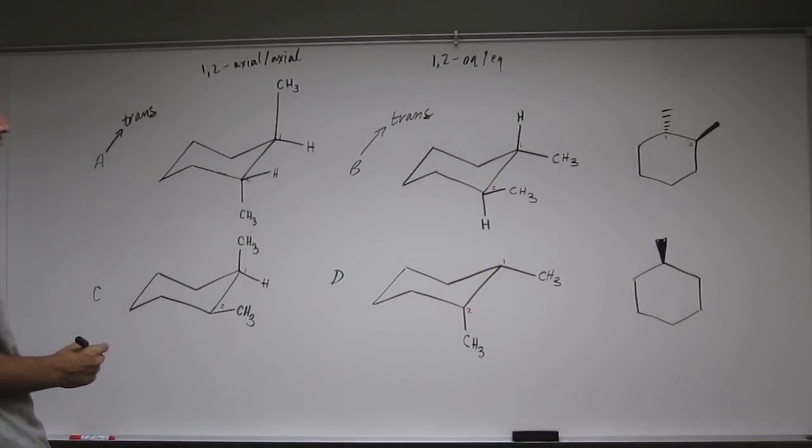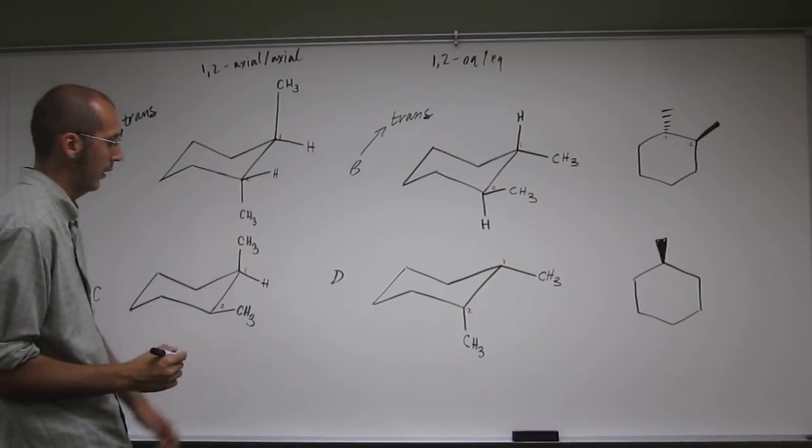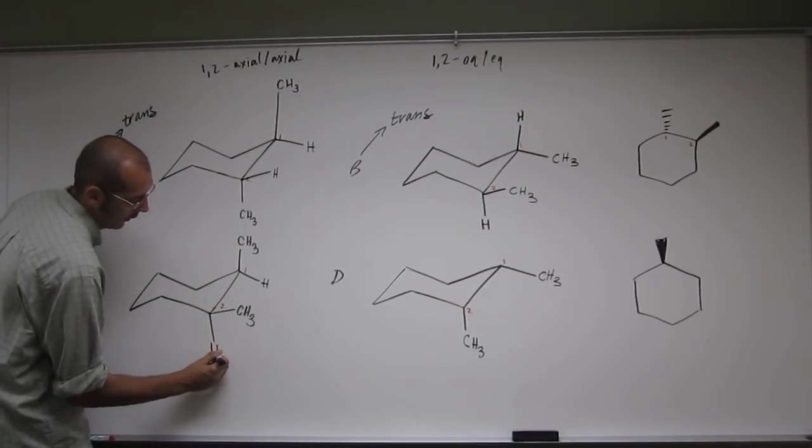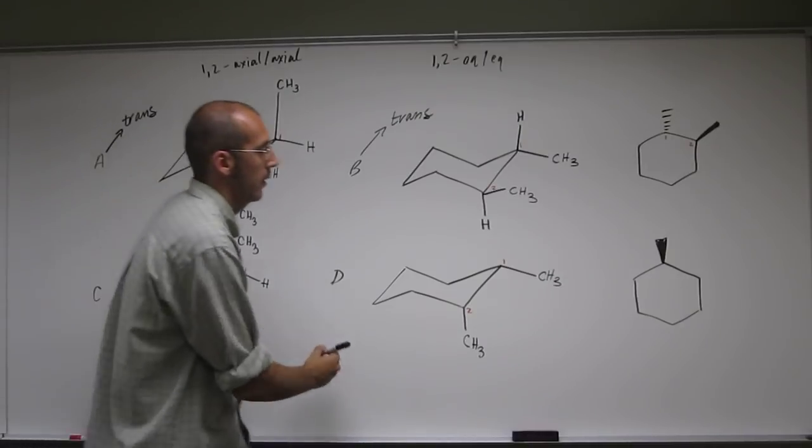Hydrogen, fat wedge. Hydrogen is down in equatorial. Hydrogen is down in axial here. So the methyl is up.